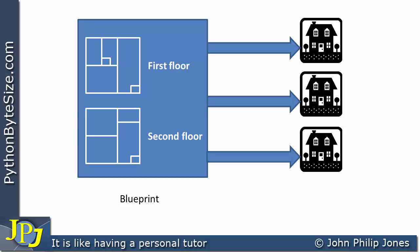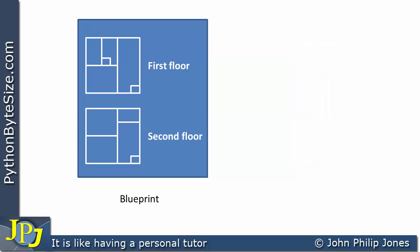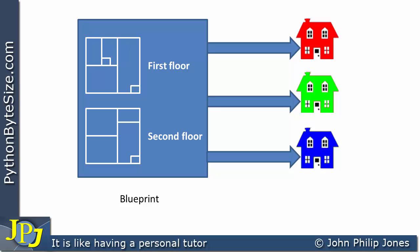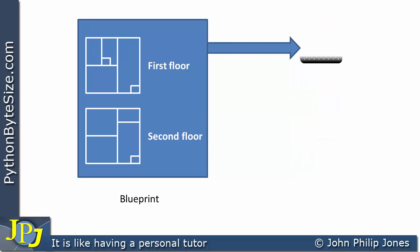If we take this analogy a little bit further, here's the blueprint again. It's possible to build a property and have it colored red. It's possible to build more or less the same property because it's come from the same blueprint, but on this occasion we've changed one of its attributes — we've made it a green color. And we could build a house again, but this time it is actually blue.